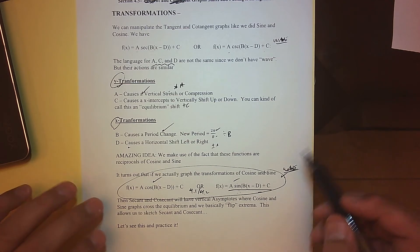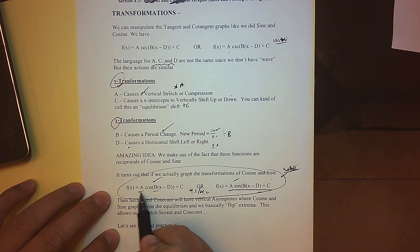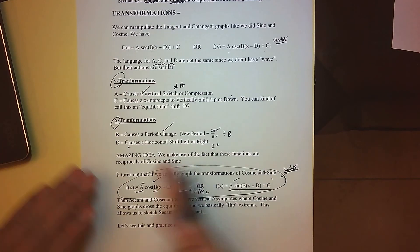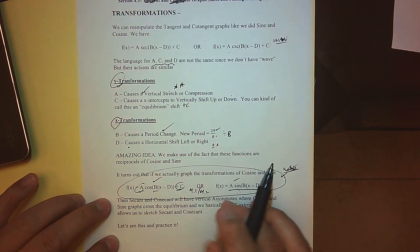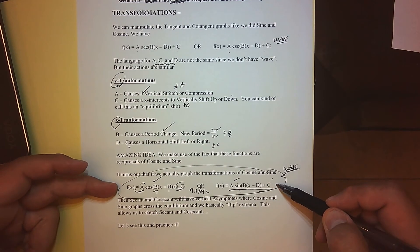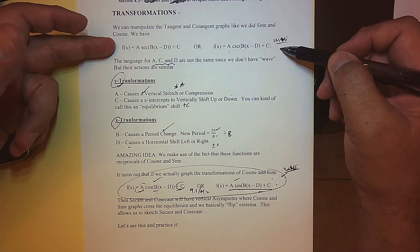So I'm going to utilize this, and we'll analyze all the transformations where a actually means amplitude, c actually means equilibrium shift, b means we have a period change, and d means we have a phase shift. So our old language for a, b, c, and d are in play with sines and cosines.